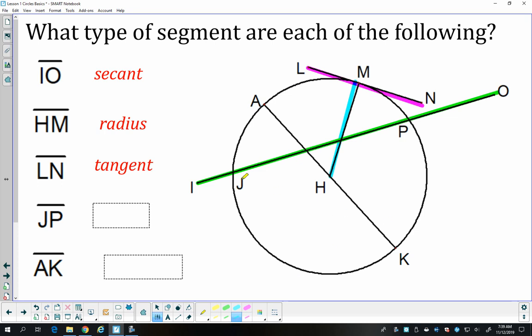JP starts at J, ends at P. It stays inside the circle the whole time. It touches the circle twice, and so that would be a chord. And last, AK touches the circle once, touches it twice, stays inside, and it goes through the center, and so that is a diameter.